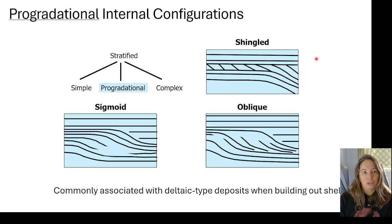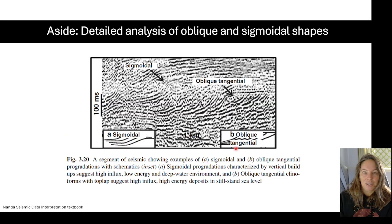We also have progradational internal configuration patterns, and I'll show a couple of quick examples of these. You've got some stratification, you can have your shingled patterns, you can have sigmoidal, and then you could have oblique. The way I try to remember the difference between these is - all of these are building out. But with the oblique ones, we tend to be moving less up and more out, whereas the sigmoidal, we tend to be building up and out at the same time. And so that gives us information. Here's an example from the Nanda seismic data interpretation textbook showing some oblique and some sigmoidal. You could see the oblique, we're building out in this direction, not up so much, but out. So oblique starts with an O, building out starts with an O - I try to do these kind of little tricks to remember things. And then sigmoidal, we're building up and out a little bit more.